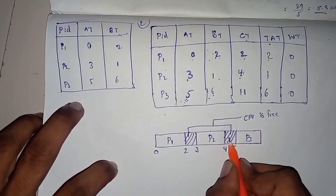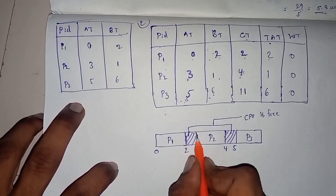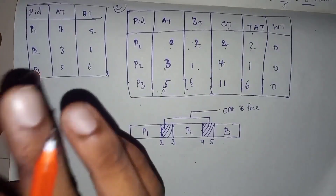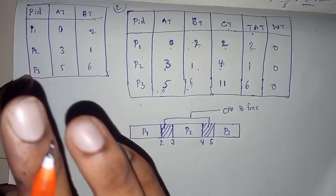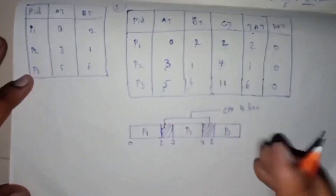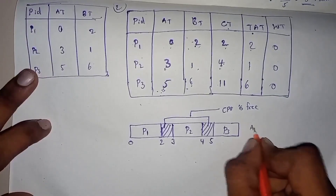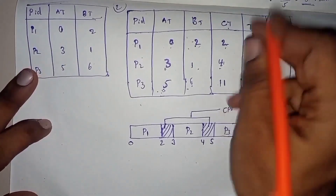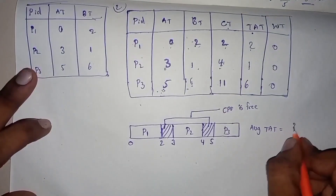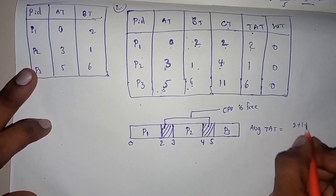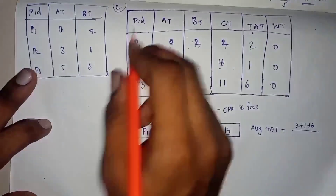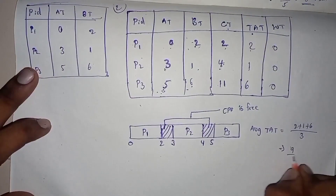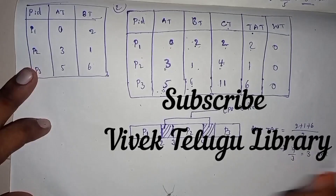CPU is complete. P1, P2, P3 process is complete. Next we calculate the average turnaround time and the average waiting time. Average turnaround time: 2 plus 1 plus 6, and the number of processes is 3. So 9 by 3, that is 3 units.